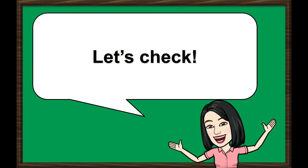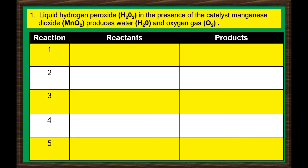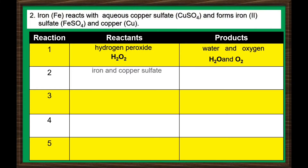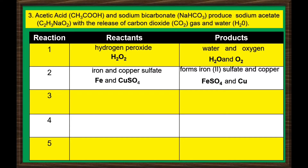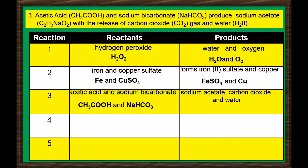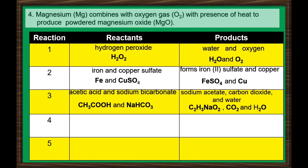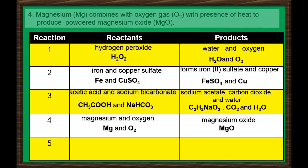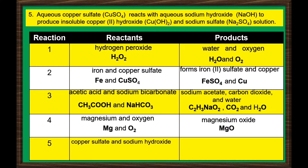Let us check your answers. For the first chemical reaction, the reactant is hydrogen peroxide; manganese dioxide is not a reactant but rather a catalyst. The products are water and oxygen. For the second, the reactants are iron and copper sulfate, and the products are iron-2-sulfate and copper. For number three, the reactants are acetic acid and sodium bicarbonate, and the products are sodium acetate, carbon dioxide, and water. For number four, the reactants are magnesium and oxygen, and the product is magnesium oxide. For the last reaction, the reactants are copper sulfate and sodium hydroxide, and the products are copper-2-hydroxide and sodium sulfate.